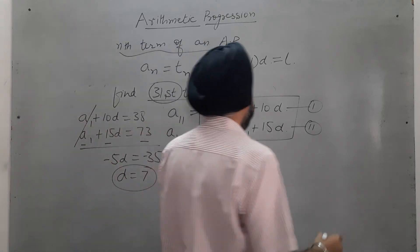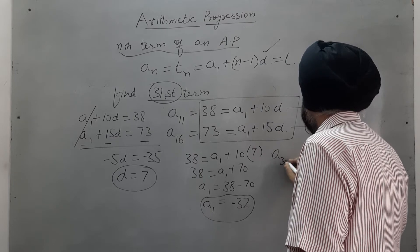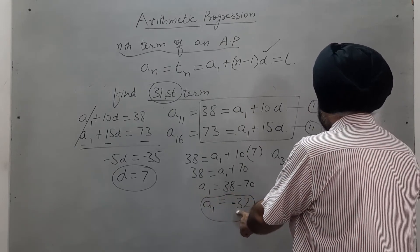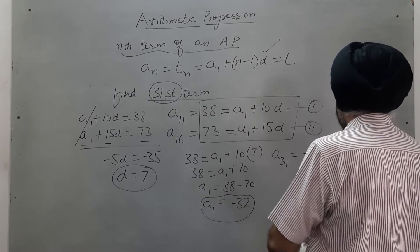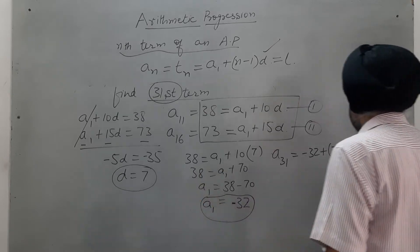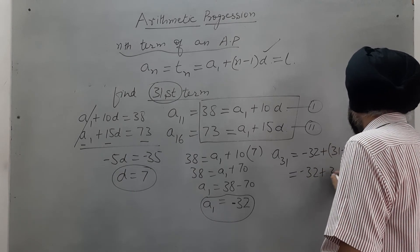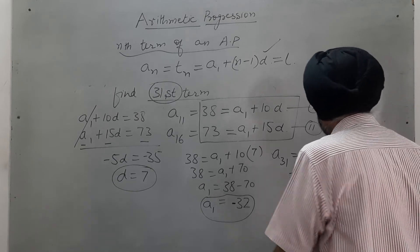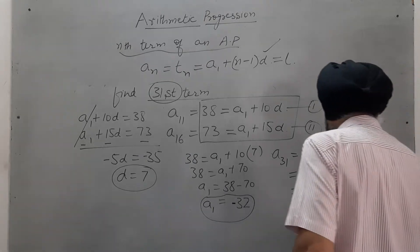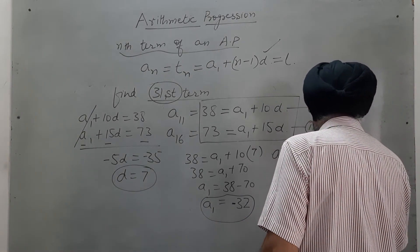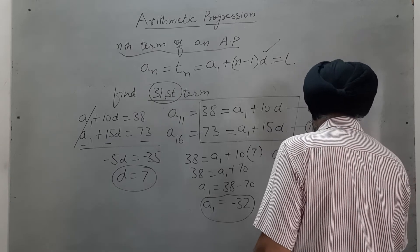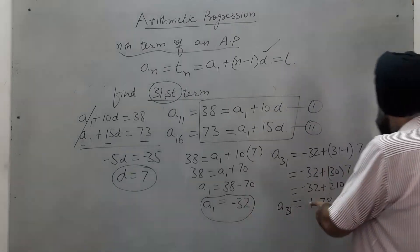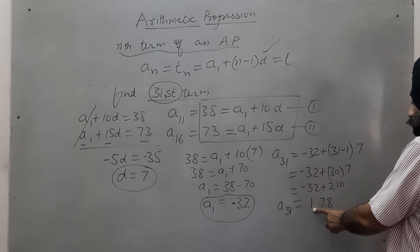Now finding the 31st term using the formula: A₃₁ = A₁ + (31 minus 1) × D = minus 32 + 30 × 7 = minus 32 + 210 = 178. Therefore, the 31st term A₃₁ is 178.